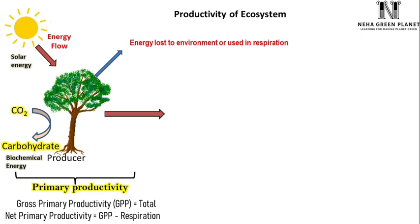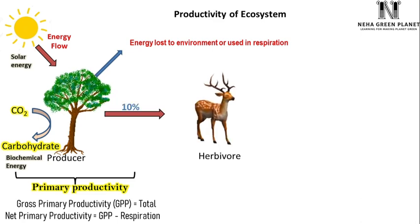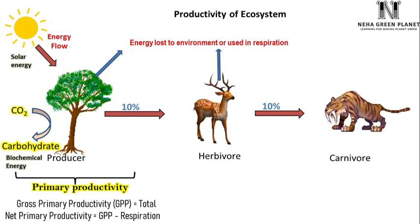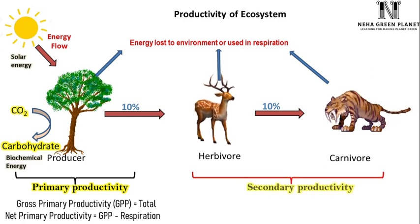From the producer, approximately 10% of energy is transferred into the body of herbivores. In herbivores, some amount of energy is stored in their body while a portion is lost to the environment or used in respiration or other metabolic processes. From herbivores, 10% of energy is further transferred into carnivores. Carnivores also utilize the energy available to them — some is stored in their body and a portion is lost to the environment or used in respiration.